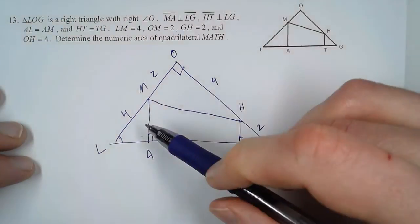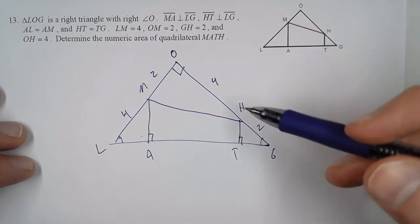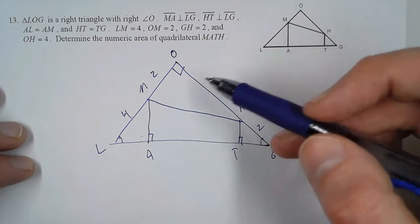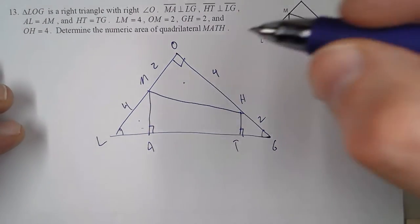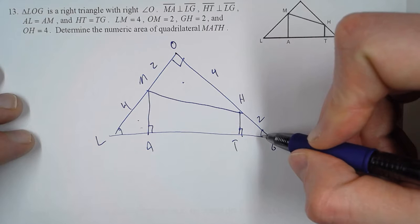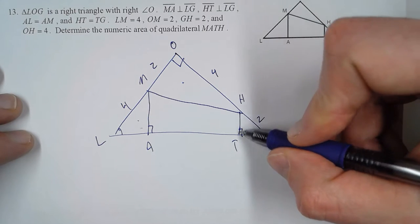So if we want this area, what we're going to do is we're going to find the area of the entire triangle, and then we're going to subtract away each individual triangle. So, this is a 45-45-90 triangle right here. To get the area, we want the legs.